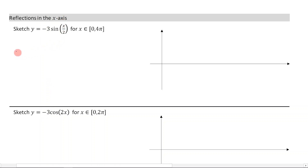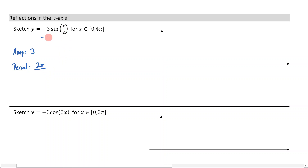We're going to approach these as we normally would, beginning by finding the amplitude. Remember, you just ignore the negative when finding the amplitude — it's just going to be the number here, so 3. Then we're going to find the period. The period is 2π over the coefficient. If we rewrite this, it's just a half x, so a half goes here, which means the period is going to be 4π.